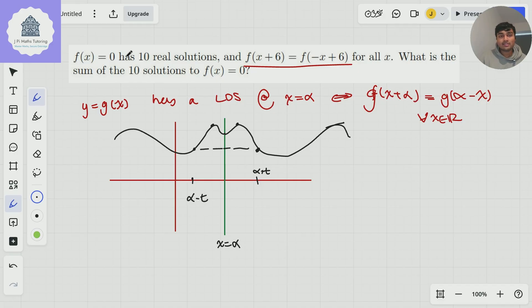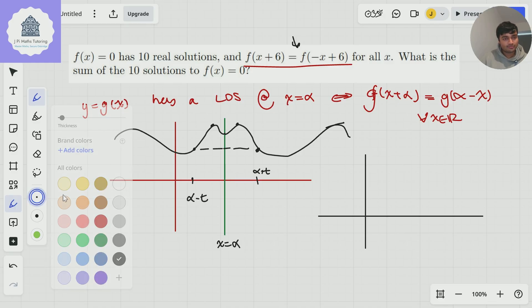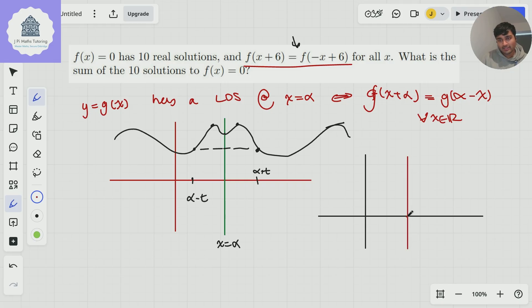Okay, great. So we're told that this function, f of x equals 0, has 10 real solutions. And because of what we've just investigated, it has symmetry in the line x equals 6. So this is going to be the line 6. And we're told it has 10 solutions. Well, because it has symmetry around x equals 6, half of them must be before 6.